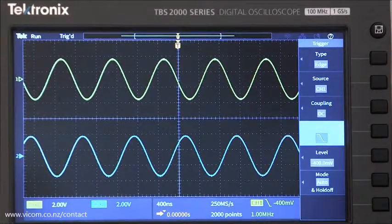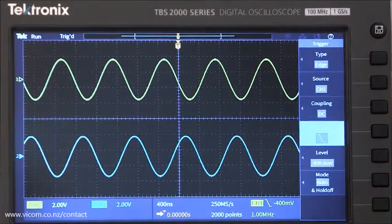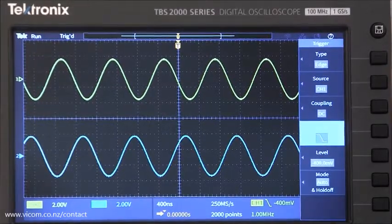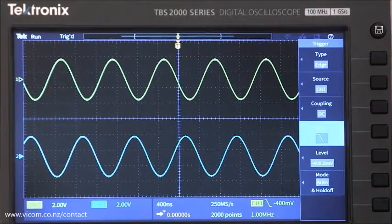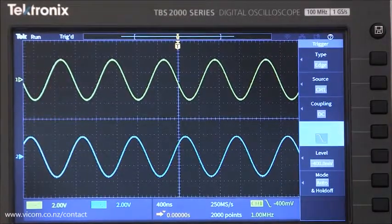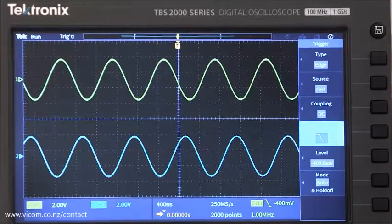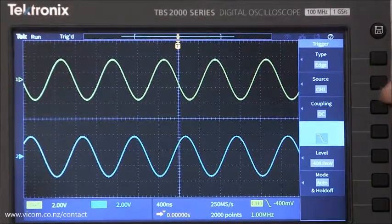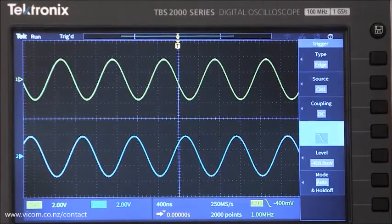With edge triggering, and this is important, the waveform is captured when the signal on this trigger source passes through a specific level on the rising or falling edge of the trigger source. Here's the source setting, the slope setting, and the level setting.